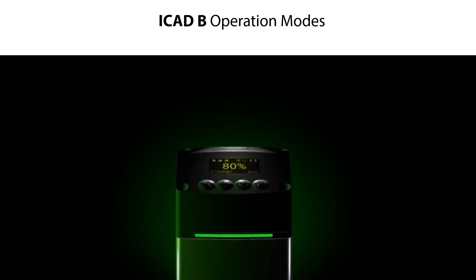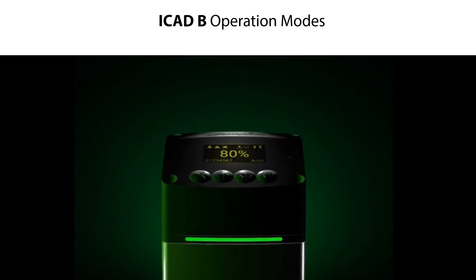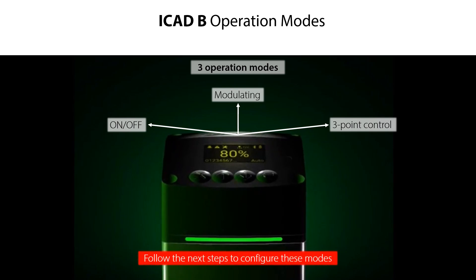Let us then use the ICAD-B display interface to configure the available operation modes, which are Modulating Operation, On-Off Operation, and 3-point Control Operation. To configure these modes, do the following.